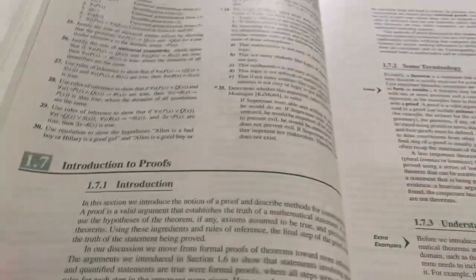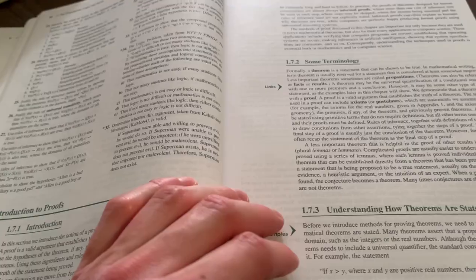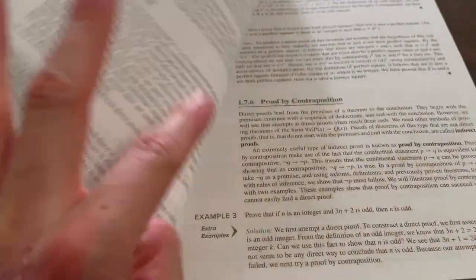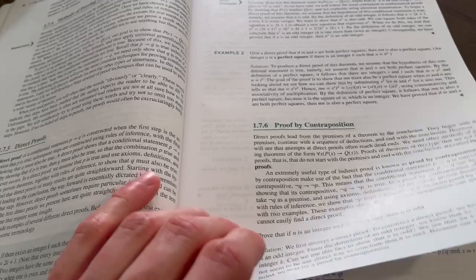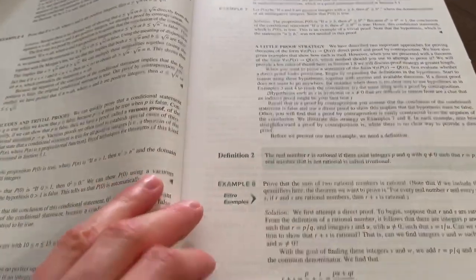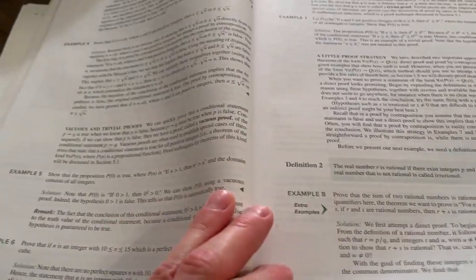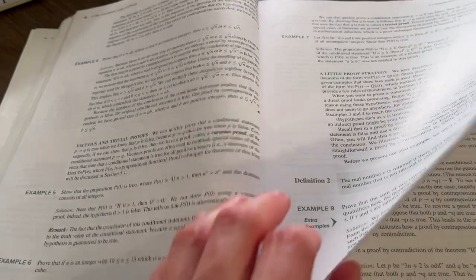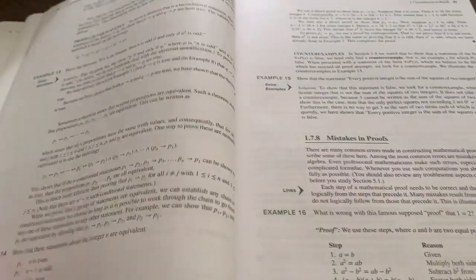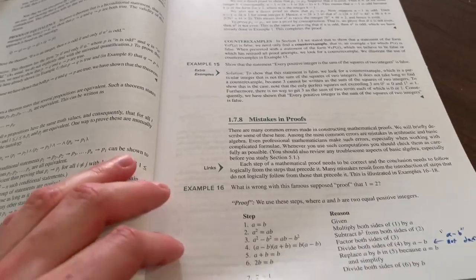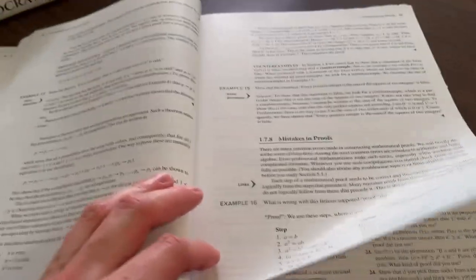And then we get into proofs. And here we're thinking about mathematical proofs. So, for example, direct proofs, proof by contraposition. A lot of these examples use elementary number theory. Proof by contradiction. We can think about errors in proofs.